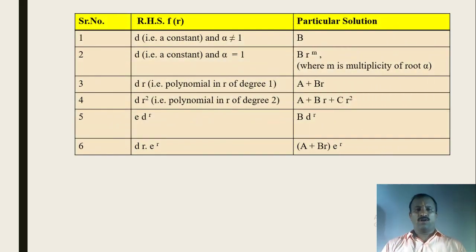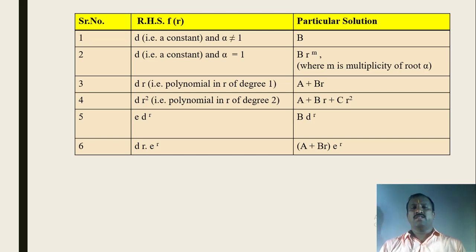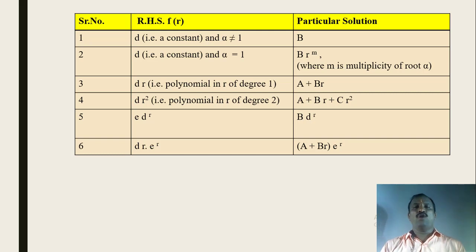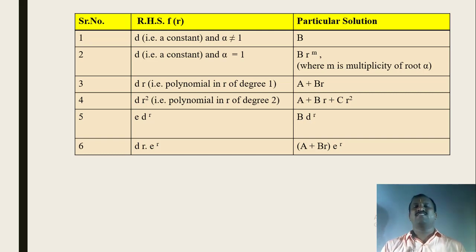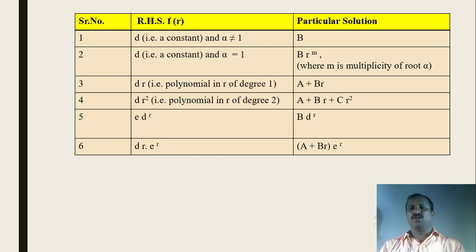We see in tabular form: there are different forms of the function f(r), and for each form what the particular solution is. Case 1: if the RHS is a constant d and the characteristic root is not equal to 1, then the particular solution is simply capital B, where B is a constant. We can treat that constant d as d·r⁰, a polynomial of degree zero.